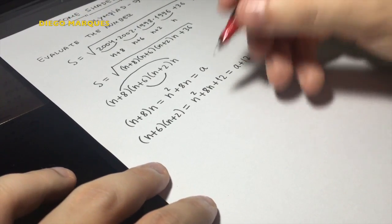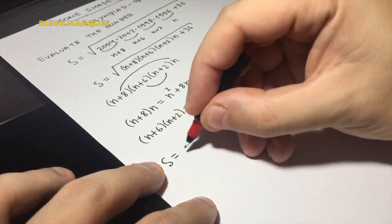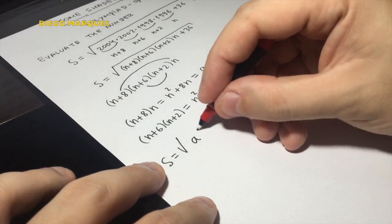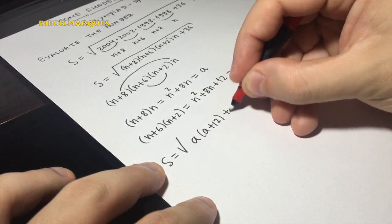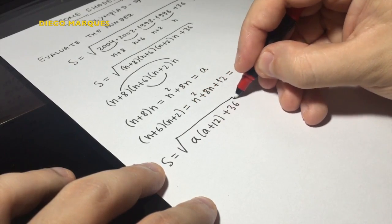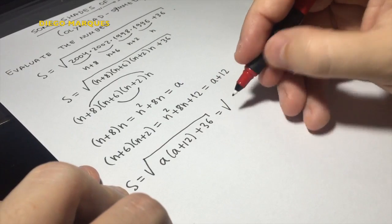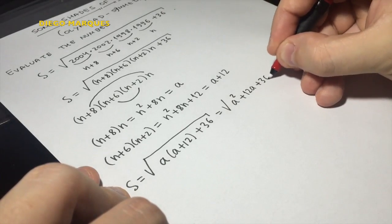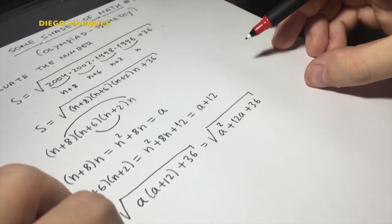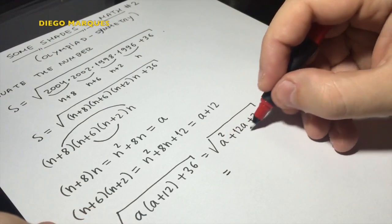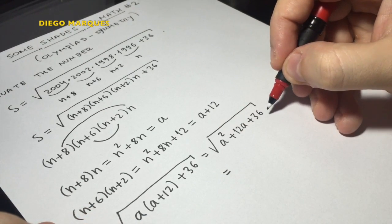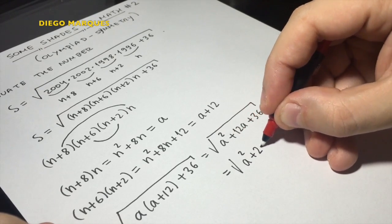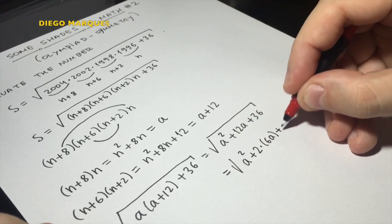So our number s is square root of a times a plus 12 plus 36. And this is square root of, making this calculation, we have a square plus 12a plus 36. Okay? So we can transform this guy in a perfect square. Actually, this is a square plus 2 times 6a plus 6 square.